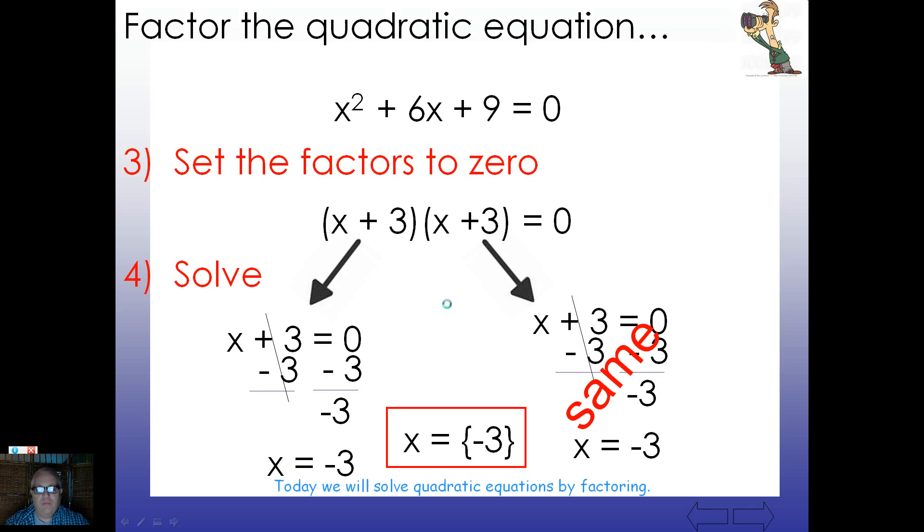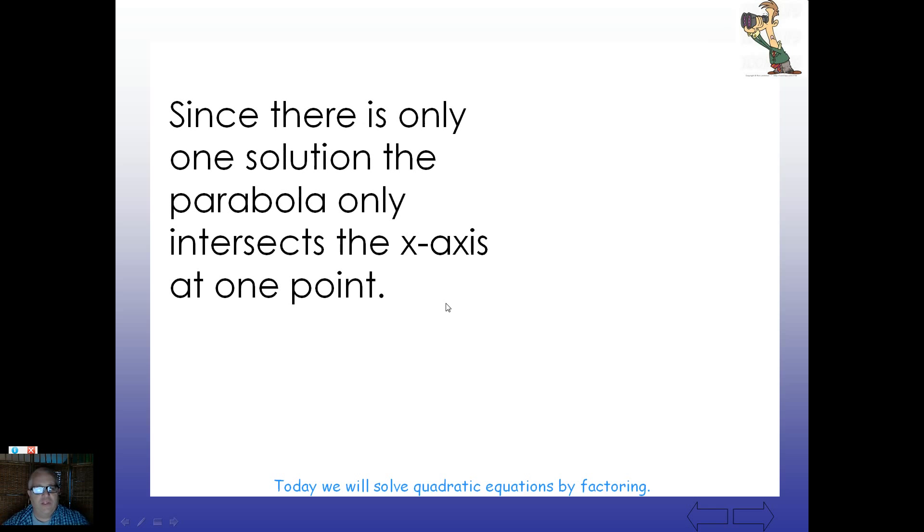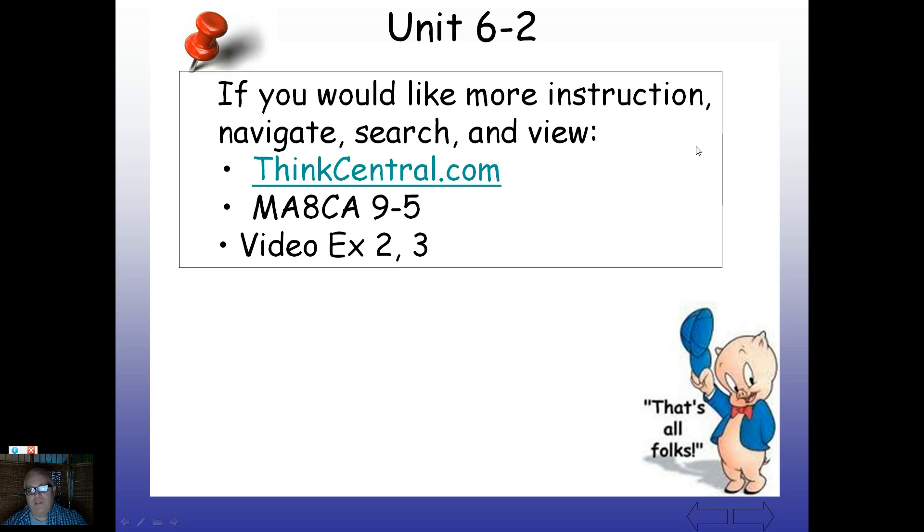All right, then. Let's take a look here. Since there's only one solution on the parabola, this only intersects the x-axis at one point, this is kind of what it would look like right here. Come down and hit and take off again. All right. Well, that's it for Lesson 6-2. Again, you can jump in there at ThinkCentral and see Dr. Berger's version. It'll be similar. He might offer you a new insight or two. And make sure you bring your notebook and be ready to go when we see you next. All right, then. Talk to you soon.